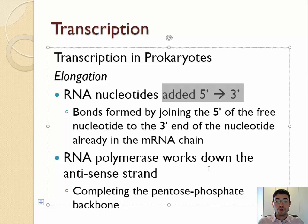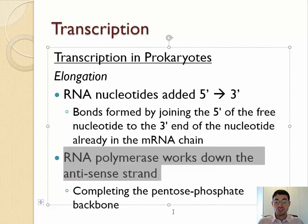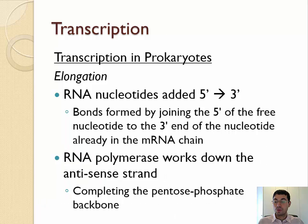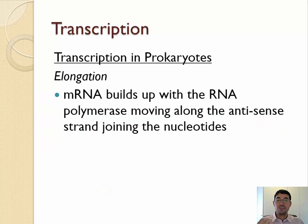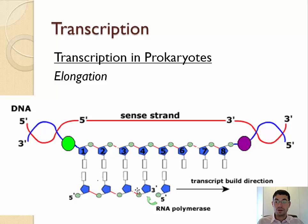Working in the 5' to 3' direction of the RNA strand and reading the antisense strand using complementary base pairing: wherever there is a T in the DNA, it will code for a U in the mRNA. Where there's a G, it will code for a C. Where there's a C, it will code for a G. And where there's an A, it will code for a U. The mRNA strand is built up because the RNA polymerase is moving along the antisense strand of the DNA, slowly making the mRNA bigger and bigger, and this continues until termination.